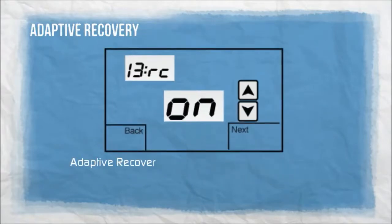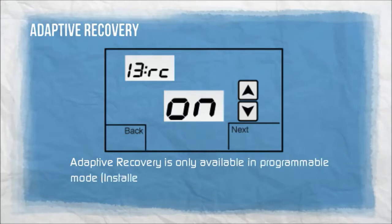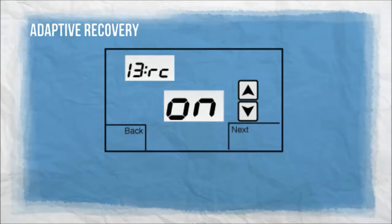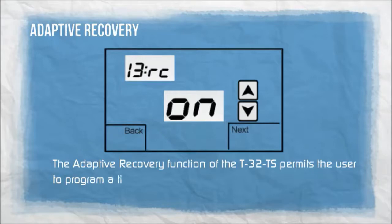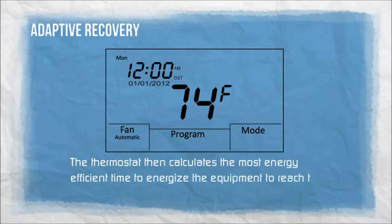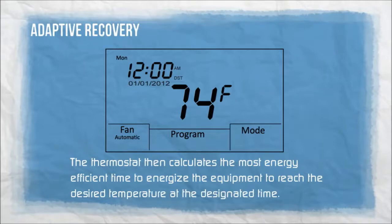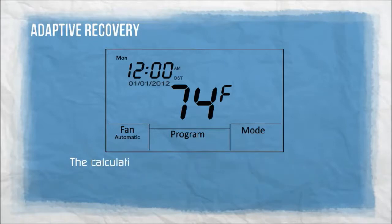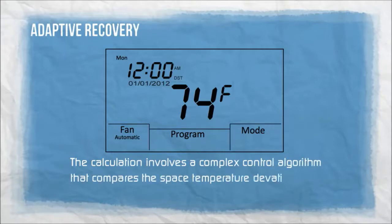Adaptive recovery is only available in programmable mode — installer option menu 13RC equals ON. The adaptive recovery function of the T32TS permits the user to program a time the desired set temperature is required. The thermostat then calculates the most energy efficient time to energize the equipment to reach the desired temperature at the designated time. The calculation involves a complex control algorithm that compares the space temperature deviation from the set point and rate of recovery history.